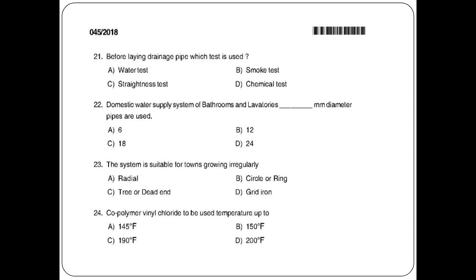Before laying drainage pipe, which test is used? Options: Water test, Smoke test, Straightness test, Chemical test. The answer is option B: Smoke test.